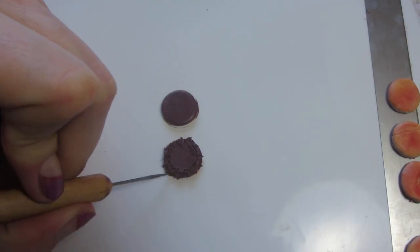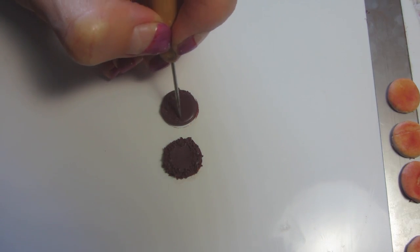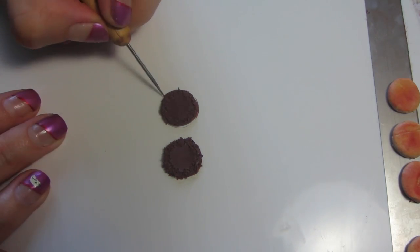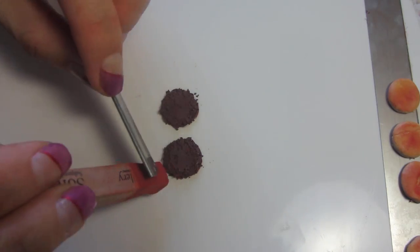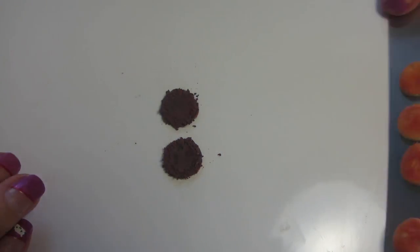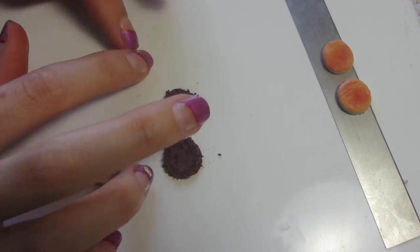And now I'm using a needle tool to just fray the burger patty. So now I'm going to add on some dark pastel and some brown.